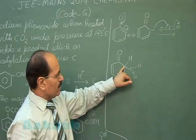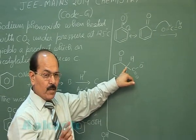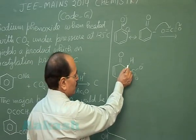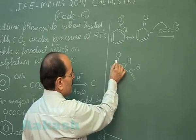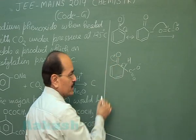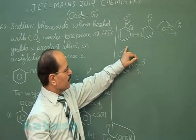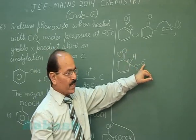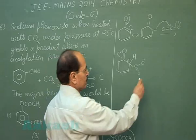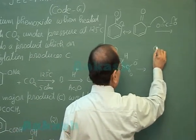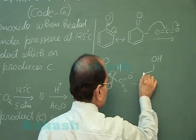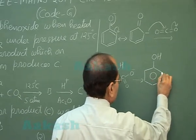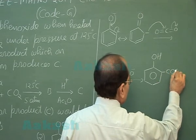To restore aromaticity, the carbon at which carbon dioxide attacks releases a proton. The pi electrons shift to oxygen. The proton is accepted by the phenoxide ion, because phenoxide ion is more basic than carboxylate ion.